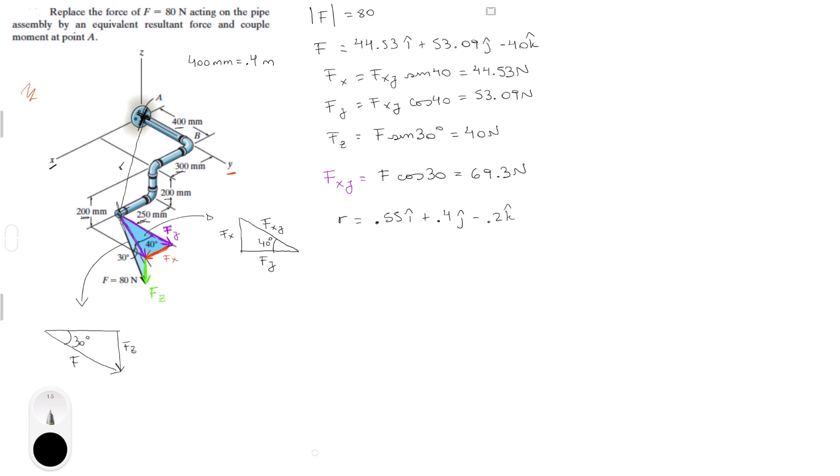So R is at 0.55 in the positive I plus 0.4 in the J minus 0.2 in the K. So now we got R. You know that the moment around A, sum of the moments, but there's only one force. So the moment around A is equal to R cross F. I, J, K. We're going to be in the matrix. Here goes R, which is 0.55, 0.4, minus 0.2. And here goes F, which is 44.53, 53.09, and minus 40.